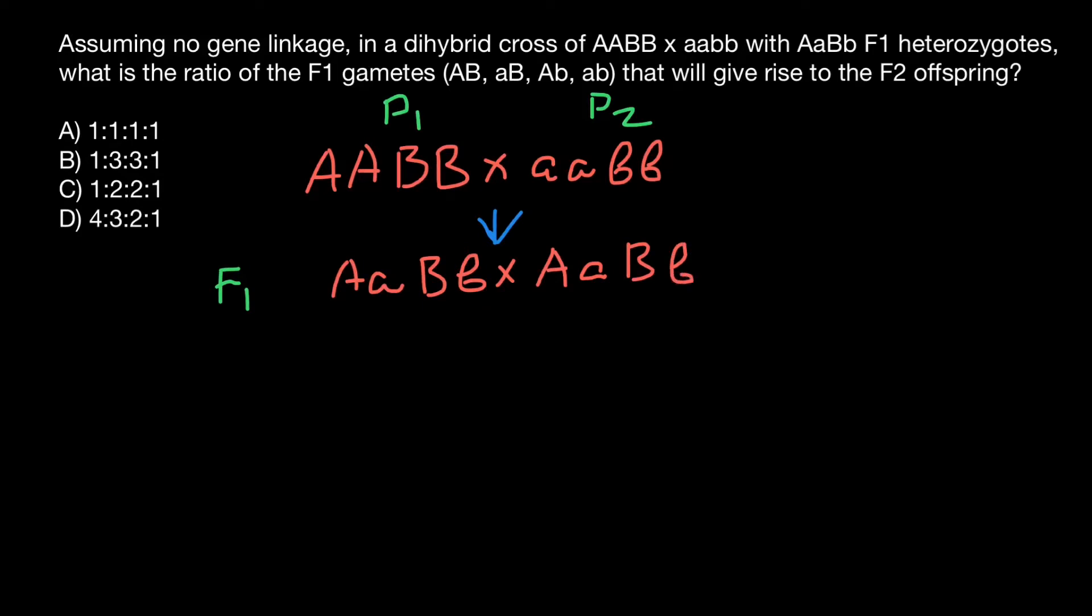Now in F1 generation we have the dihybrid cross. Parent one is hybrid for gene A and hybrid for gene B, or we also call this heterozygous. Parent two having the same genotype is also going to be dihybrid for both genes. This is how we get the next generation, which is F2 generation.